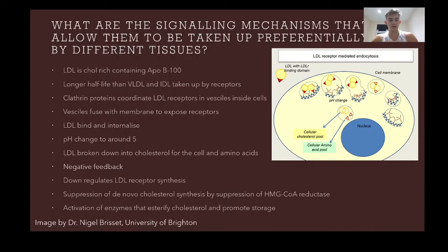There is a negative feedback mechanism where production of LDL receptors is down-regulated. There is also suppression of de novo cholesterol synthesis — de novo meaning from scratch — because our body can make cholesterol itself. The enzyme HMG-CoA reductase is inhibited, and enzymes that esterify cholesterol and promote storage are activated. Note that we don't actually need to eat cholesterol from meat or eggs; our body can synthesize it quite easily.